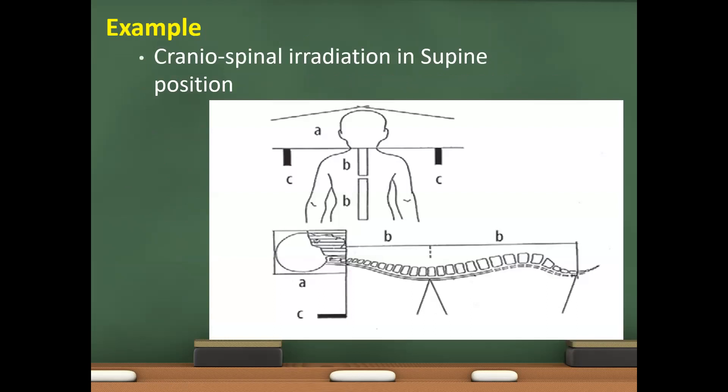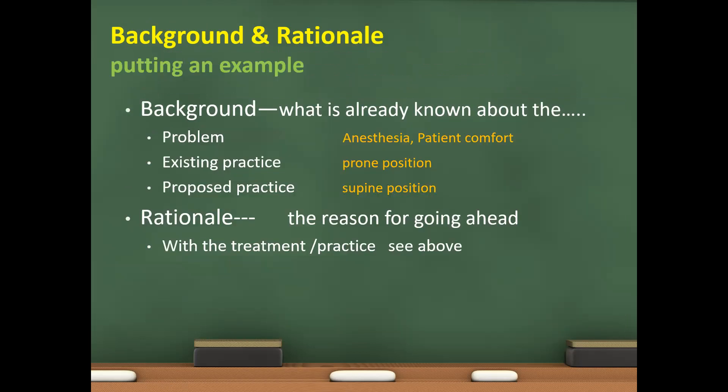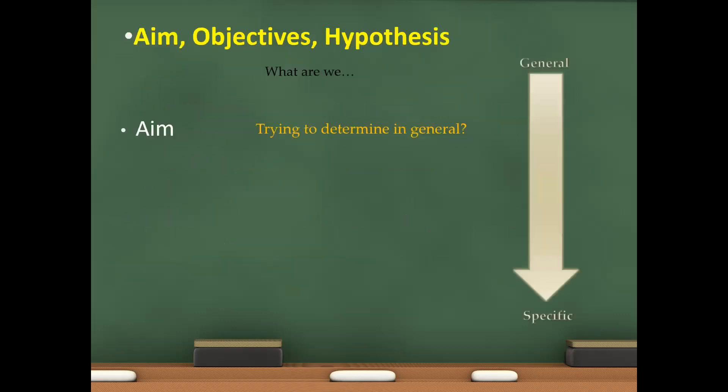So, we're going to take the example of cranial spinal radiation in supine position. So, background: what is already known about the problem. Problem is anesthesia and patient comfort in prone position. Existing practice, most of the centers use prone position. And proposed practice is supine position. So, rationale: the reason for going ahead with the treatment and practices.